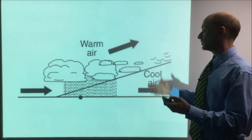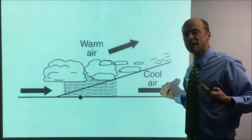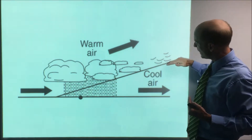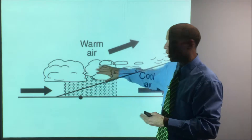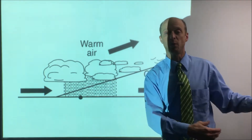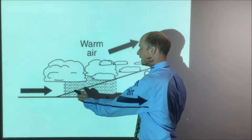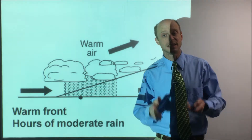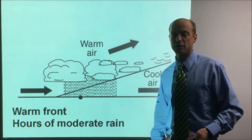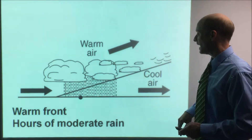A warm front looks different. The warm air is moving a little bit faster and rides up over the cooler air. This is a much more gradual slope, so the air doesn't go straight up — it's a much wider area. Air rising hits the dew point, condensation, clouds. This area is much wider, so it takes much longer to pass over you, but the rain isn't as intense because the clouds aren't as tall. The weather at a warm front is typically hours of moderate rain — light rain or heavy drizzle — lasting four, five, or six hours.